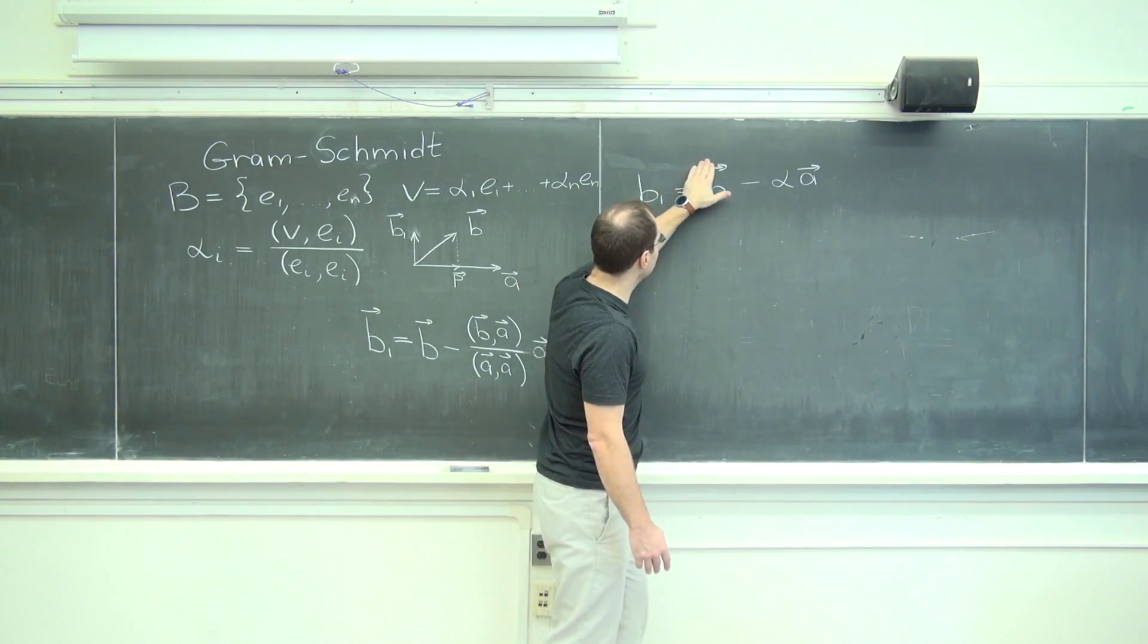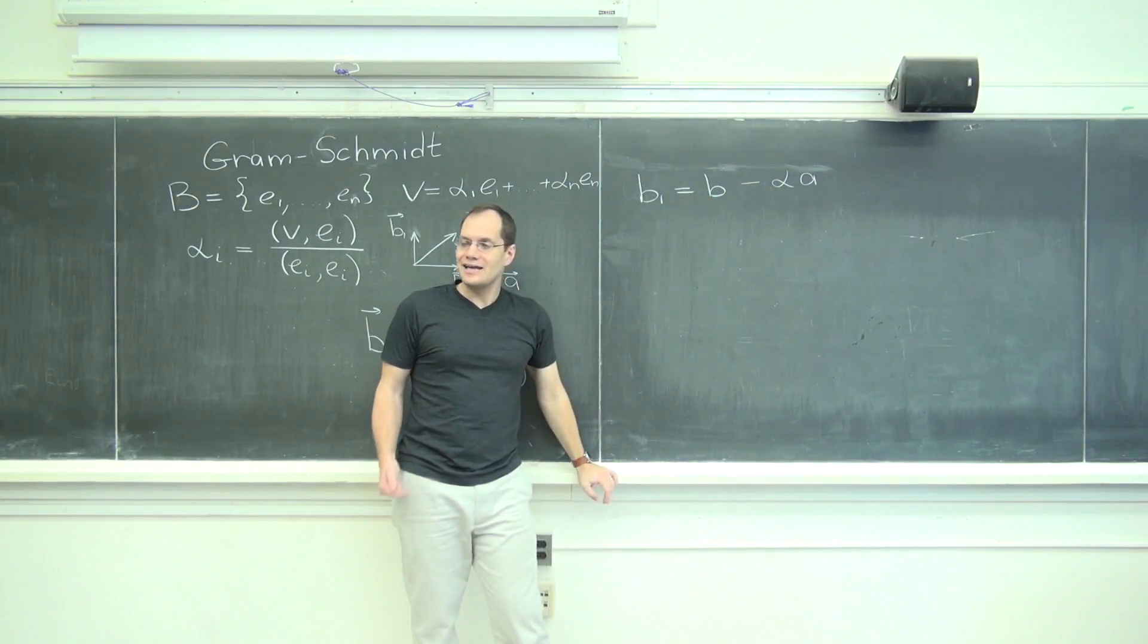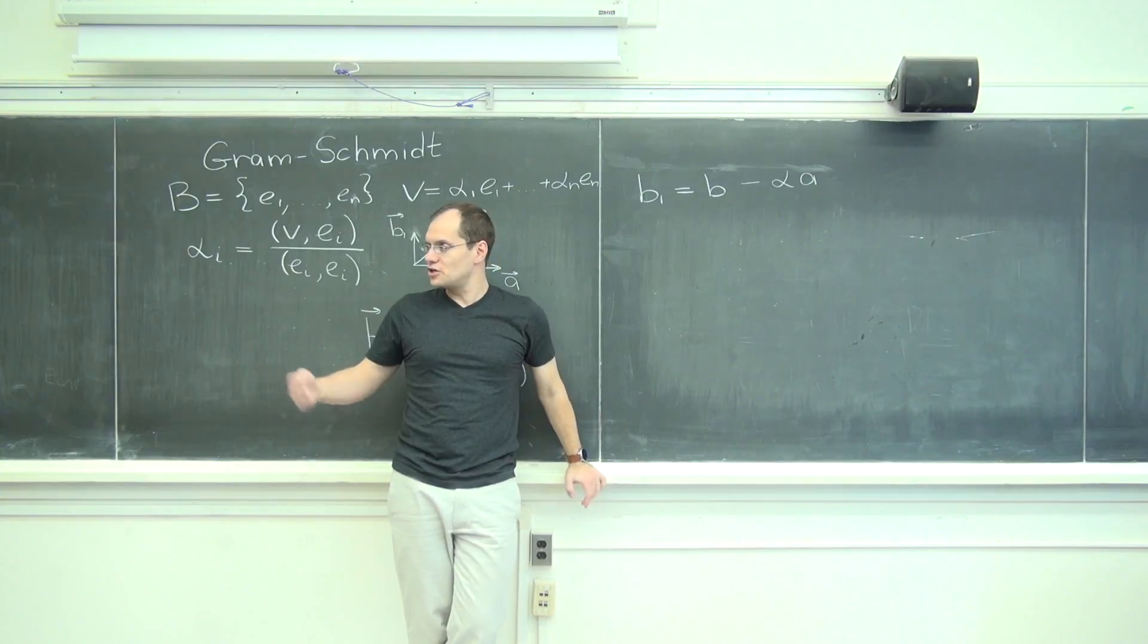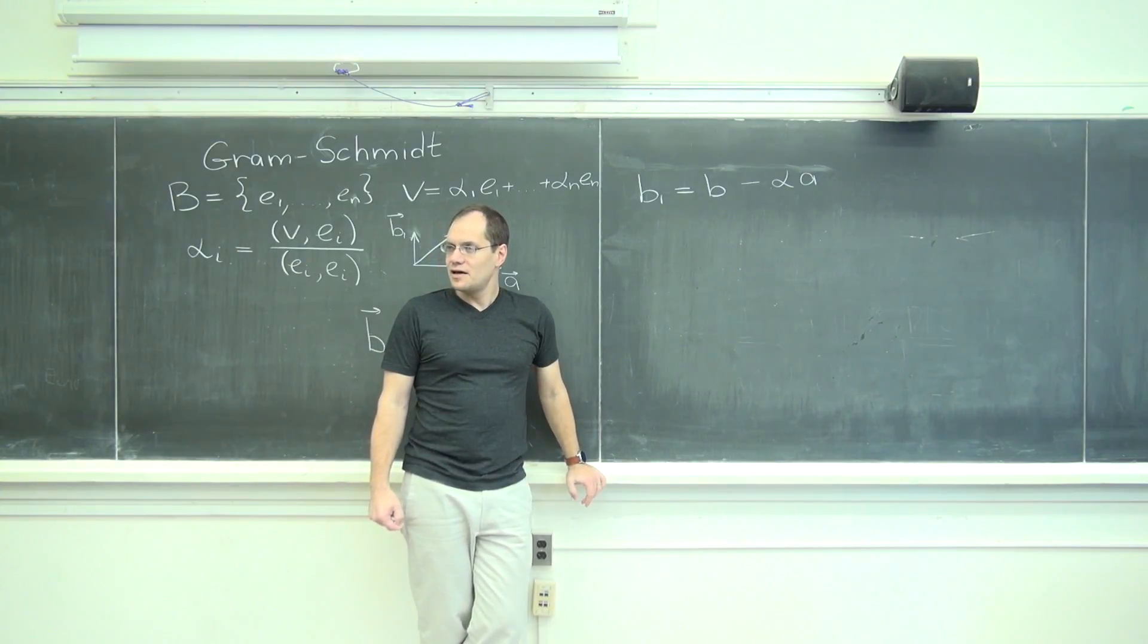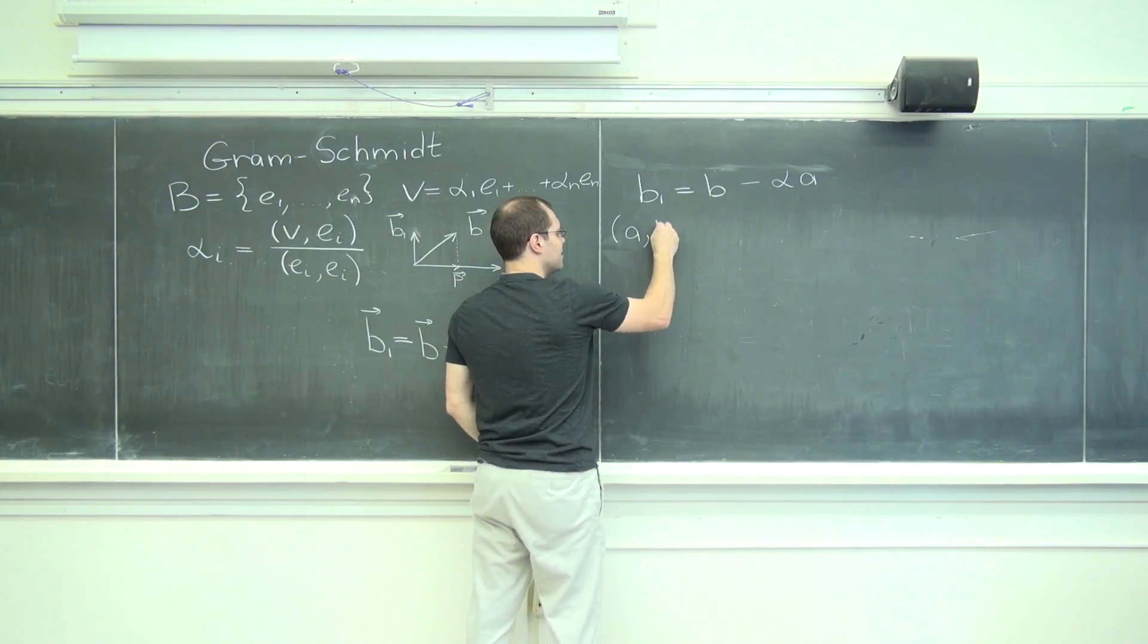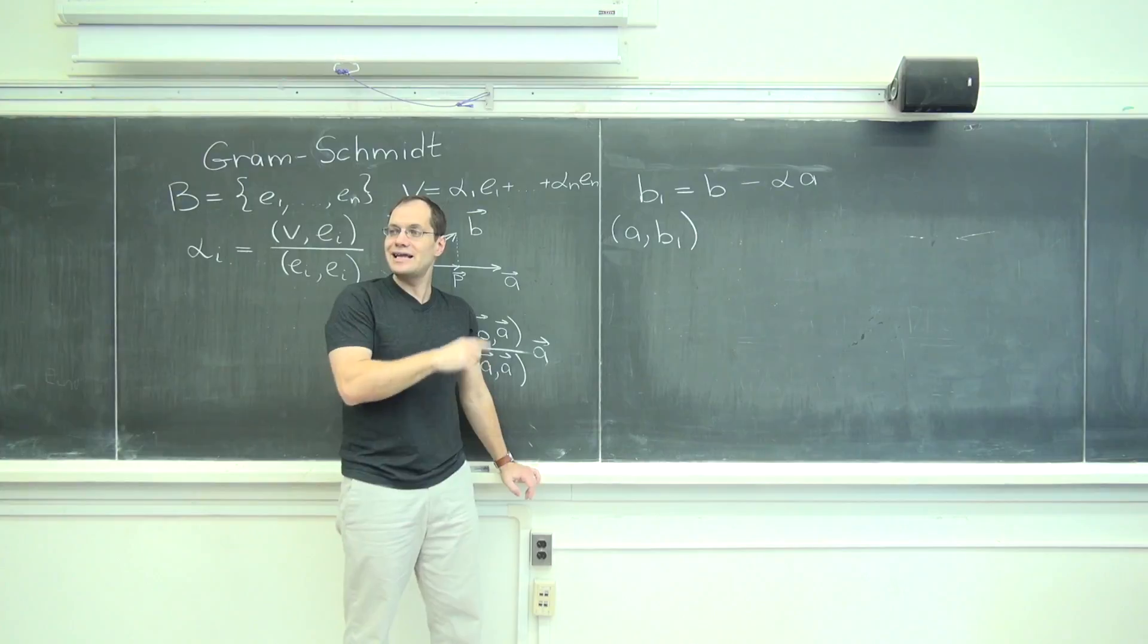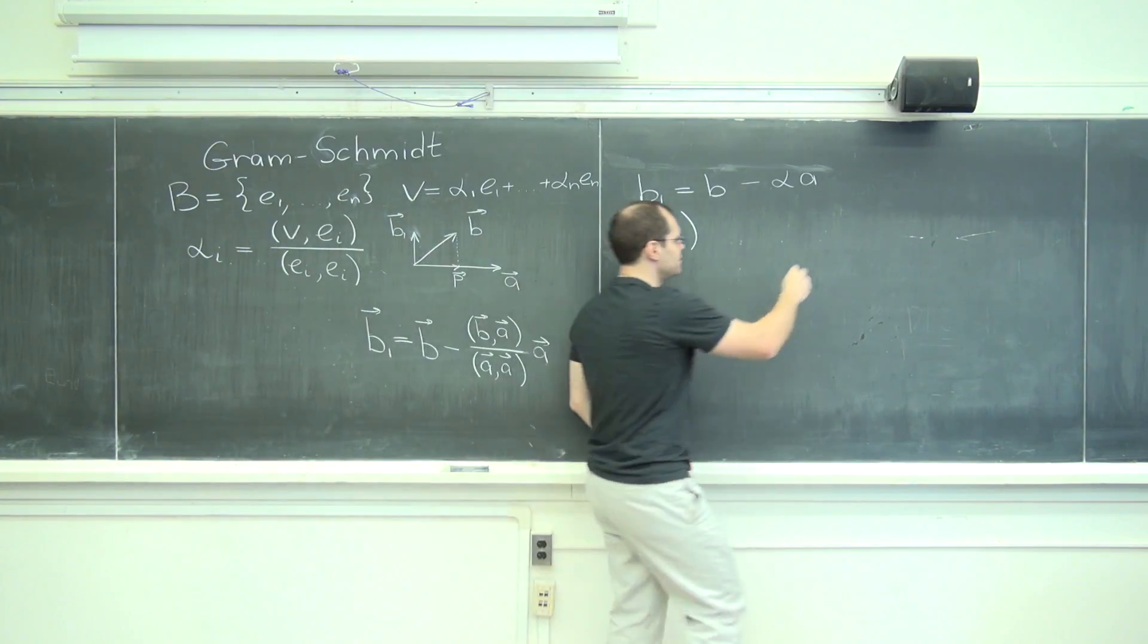Right, we're not thinking geometrically, so they don't have to be geometric vectors. And it doesn't have to be the dot product, it can be a general inner product. And so with a general inner product we'll say that our goal is that a dotted with b1, that b1 is such that a dotted with it is zero.